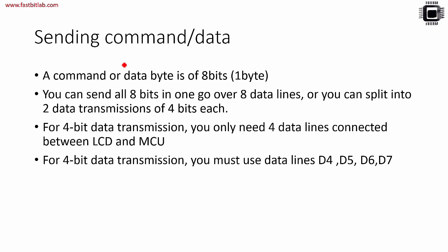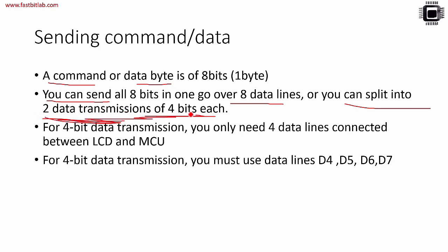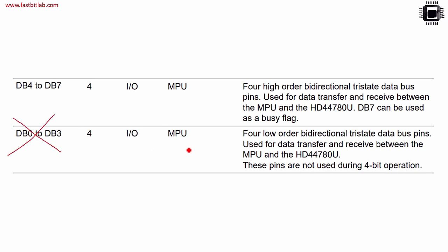Let's understand how to send a command or data to the LCD. A command or data byte is 8 bits - 1 byte long. You can send all 8 bits in one go over 8 data lines, or you can split into 2 data transmissions of 4 bits each. We are going to use this 4-bit method in this exercise. For 4-bit data transmission you only need 4 data lines connected between the LCD and the microcontroller, specifically data lines D4 to D7. DB0 to DB3 are not used at all in 4-bit mode.